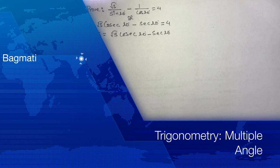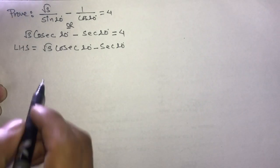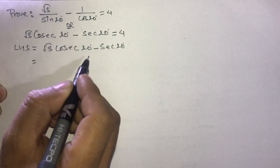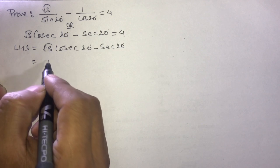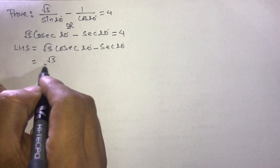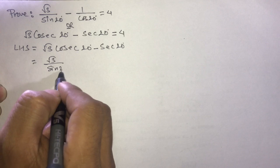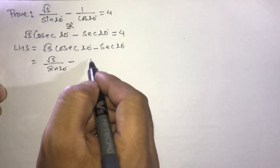Let's start from LHS. LHS is equals to root 3 by sine 20 minus 1 by cos 20. We can write this as root 3 by sine 20 degree minus 1 by cos 20 degree.